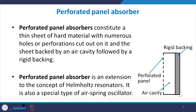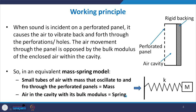We have a rigid backing — a box with a rigid backing — and this is the concealed air cavity. The perforated panel has holes at regular intervals in front of it. This perforated panel works on the concept of a Helmholtz resonator; therefore, it is also a special type of air spring oscillator.